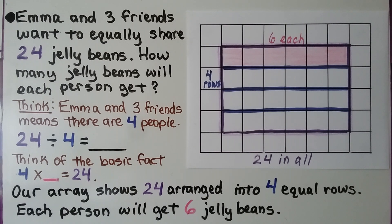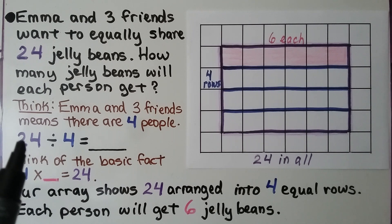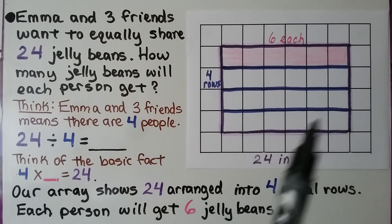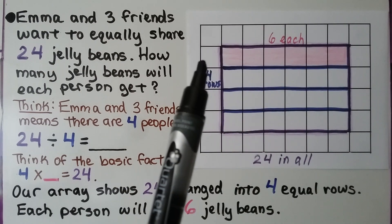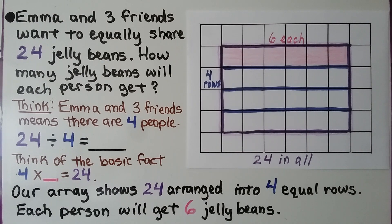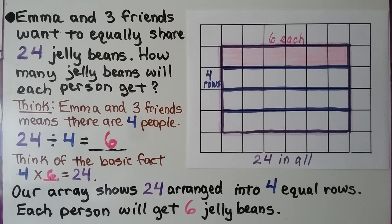Emma and 3 friends want to equally share 24 jelly beans. How many jelly beans will each person get? Emma and 3 friends means there are 4 people. We need to divide 24 jelly beans by 4 people, and we think of the basic fact: 4 times some number is equal to 24. We can make an array — 24 squares in 4 rows. 4 times 6 is equal to 24. Each person will get 6 jelly beans. We used multiplication to help us solve for division.